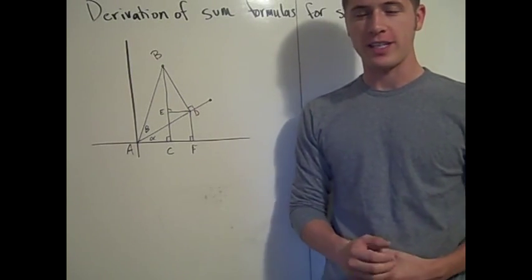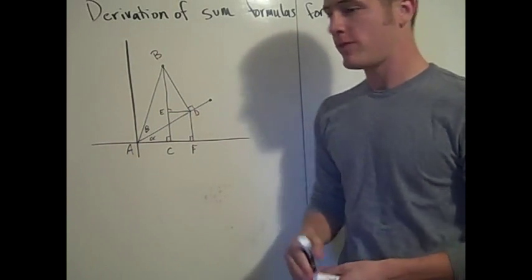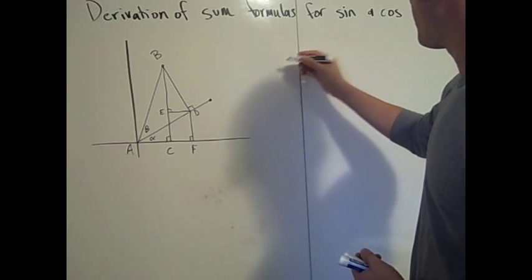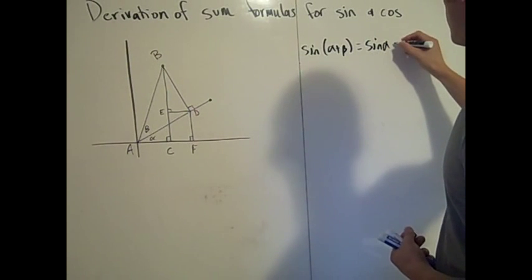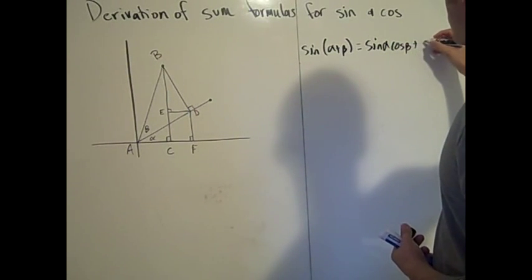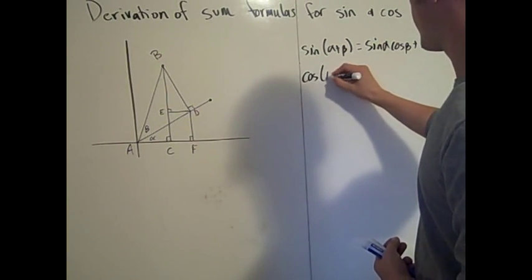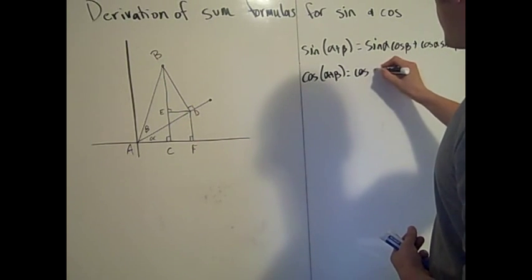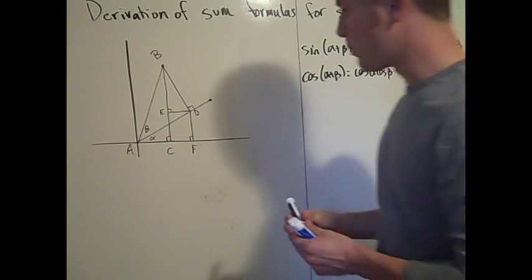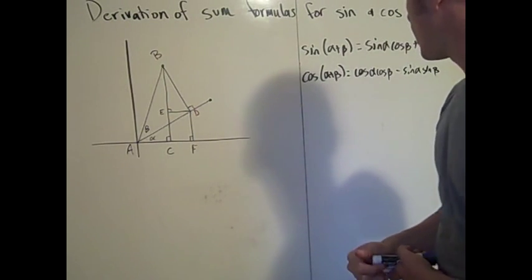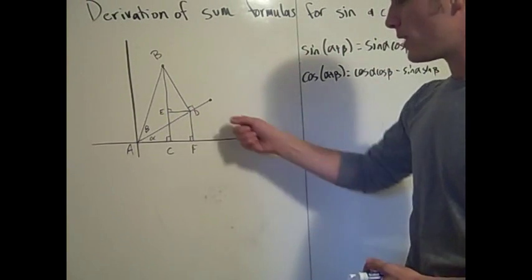This will be a proof for the sine formula and cosine formula for a sum. Perhaps you've seen them: the sine of alpha plus beta is sine alpha cosine beta plus cosine alpha sine beta, and the cosine of alpha plus beta is cosine alpha cosine beta minus sine alpha sine beta. This video will be a proof of these two crazy-looking formulas. They are sort of hard to believe just by looking at them, so it's nice to see a proof.